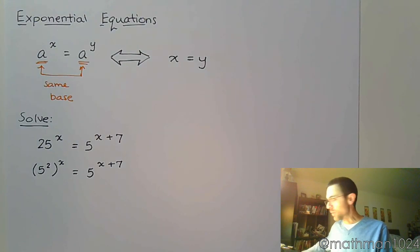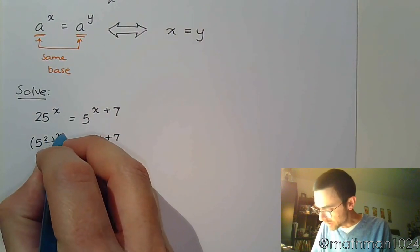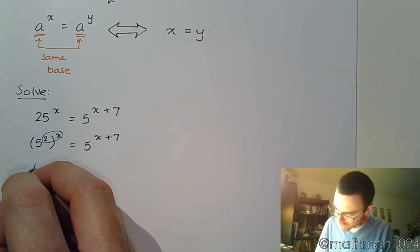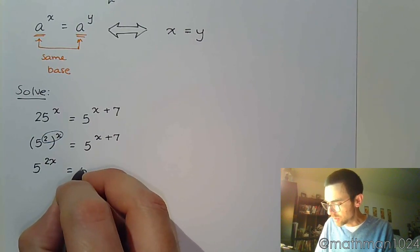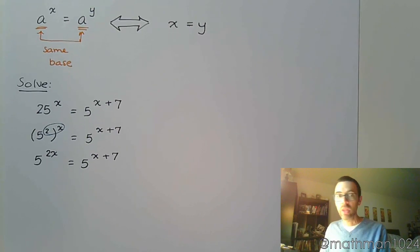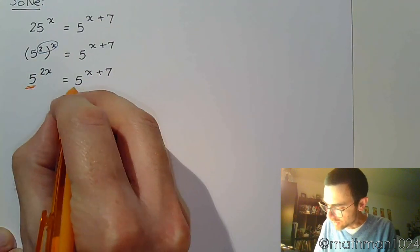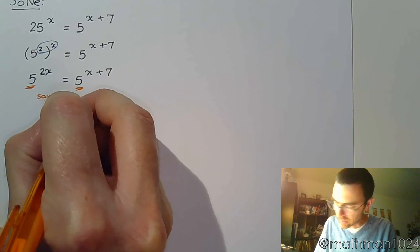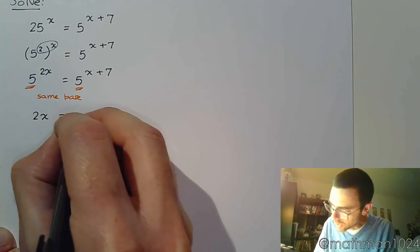Since we have powers to powers, we multiply those powers, so this becomes 5^(2x) = 5^(x+7). And since these guys have the same base, that means their powers must be equal.